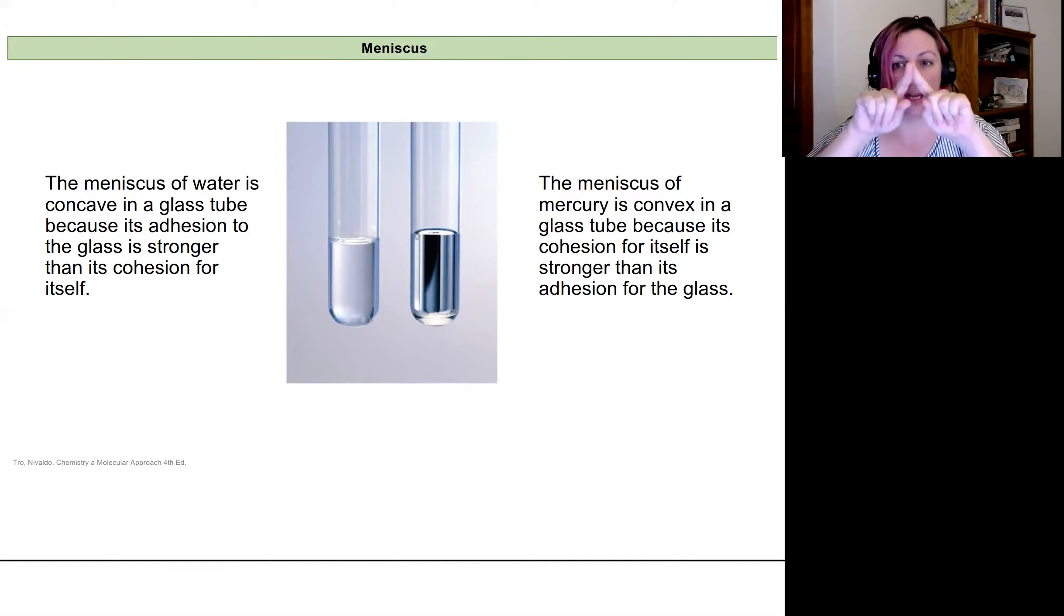And so because of that, you get a convex meniscus. So it looks like this. And so you see the little edges pinched down. So if I was going to read the volume, I'd read it from the top of the meniscus for mercury.